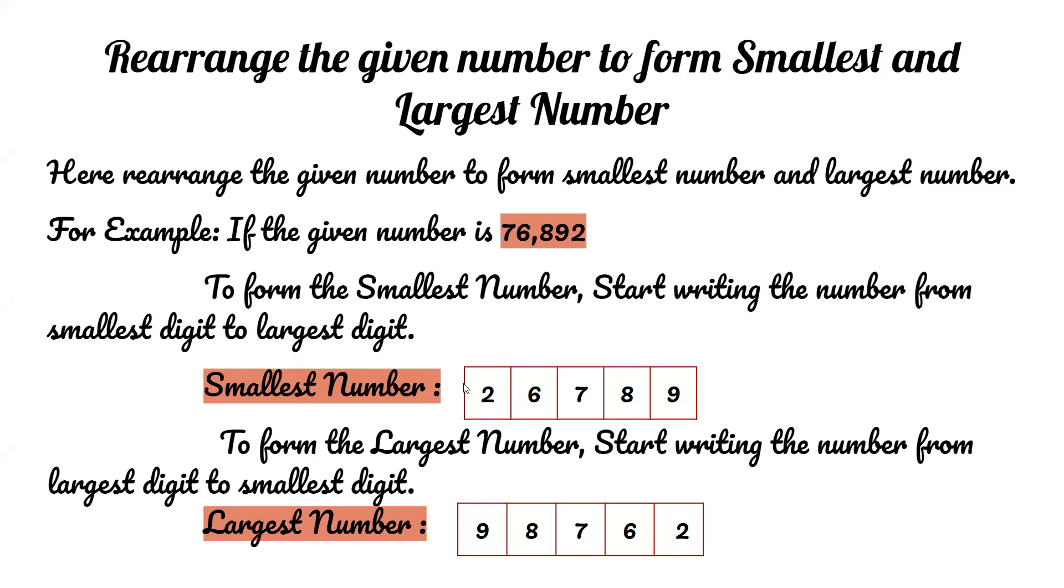To find the smallest number, we first have to find the smallest number in 76,892. The smallest number is 2, next smallest is 6, then 7, then 8, and the largest is 9. So the smallest number is 26,789.